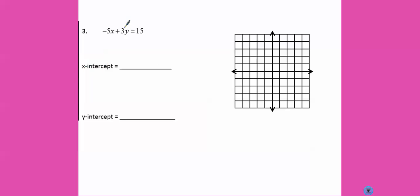So again, x intercept. Cover up the y. So negative 5x equals 15. Divide both sides by negative 5. We get that x equals negative 3.